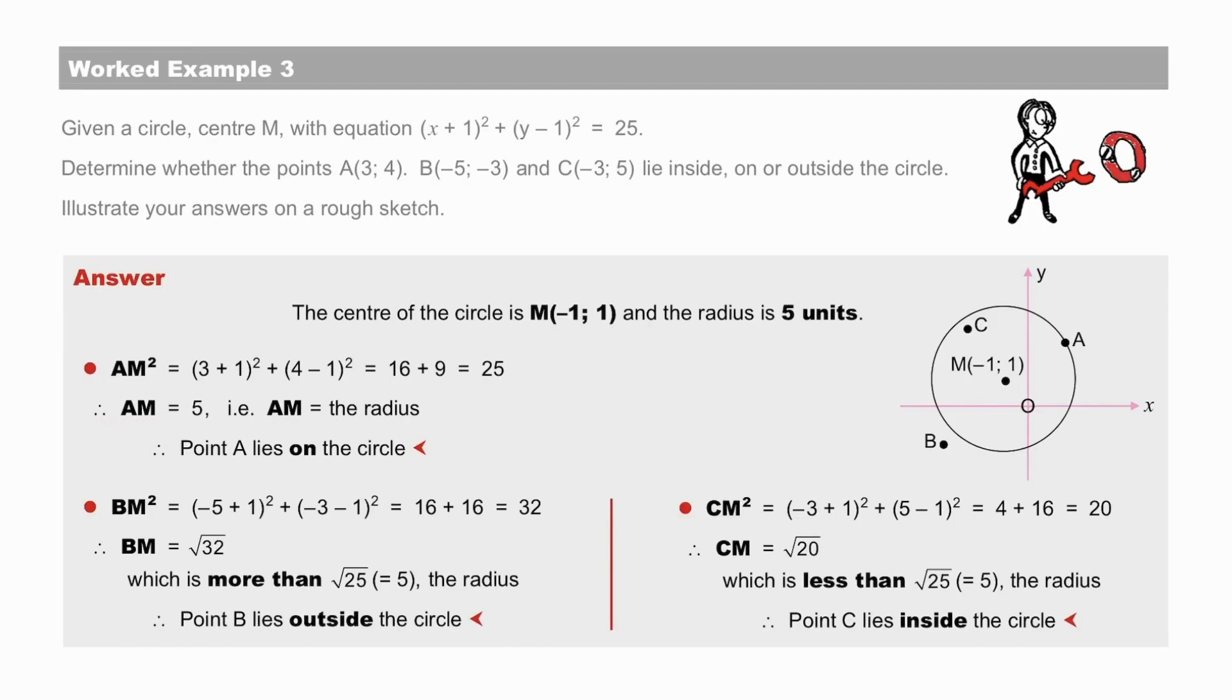The distance from A to M is equal to 5 units, which is equal to the radius of the circle, and therefore A lies on the circumference of the circle.